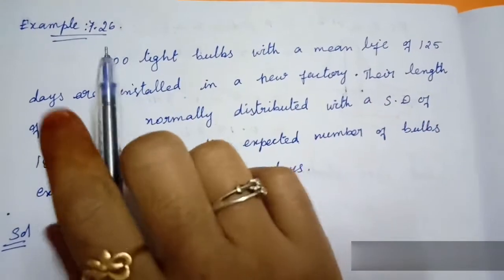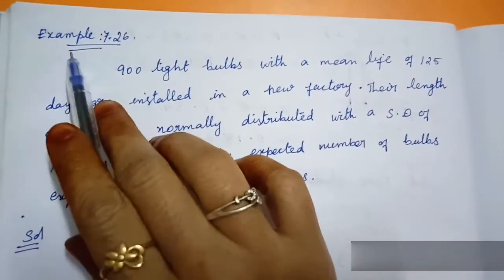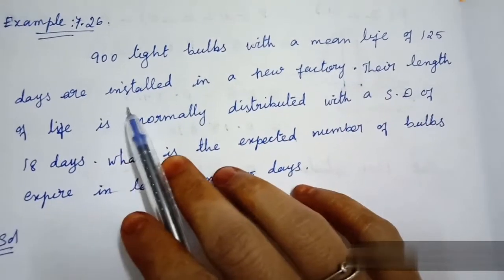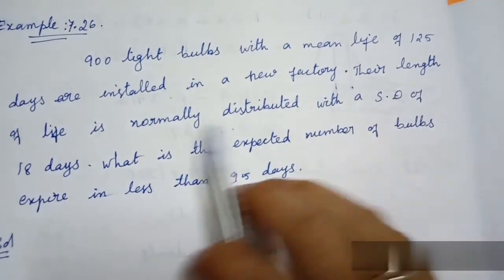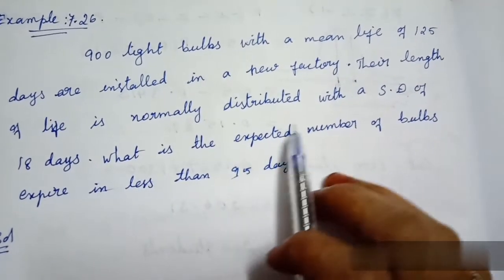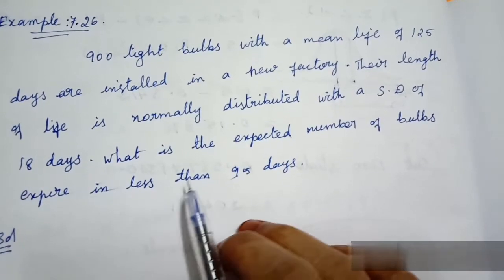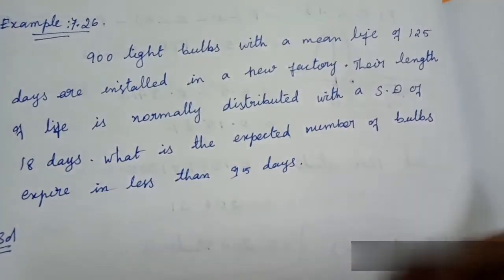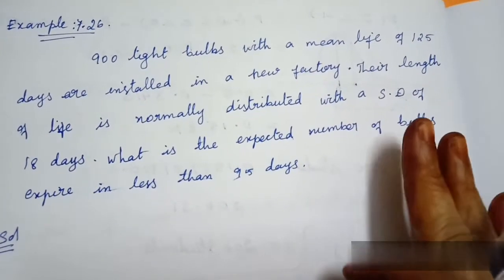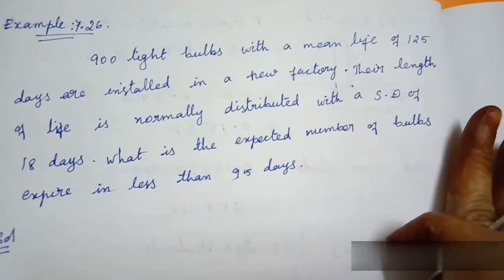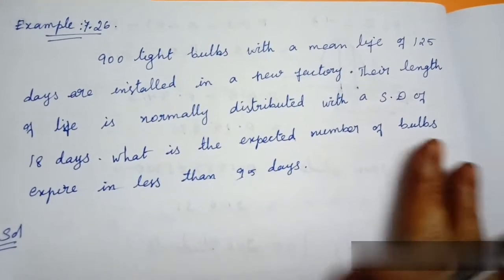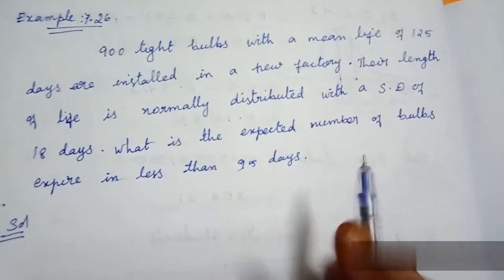Normal distribution example 7.26: 900 light bulbs with a mean life of 125 days are installed in a new factory. Their length of life is normally distributed with a standard deviation of 18 days. What is the expected number of bulbs that expire in less than 95 days?